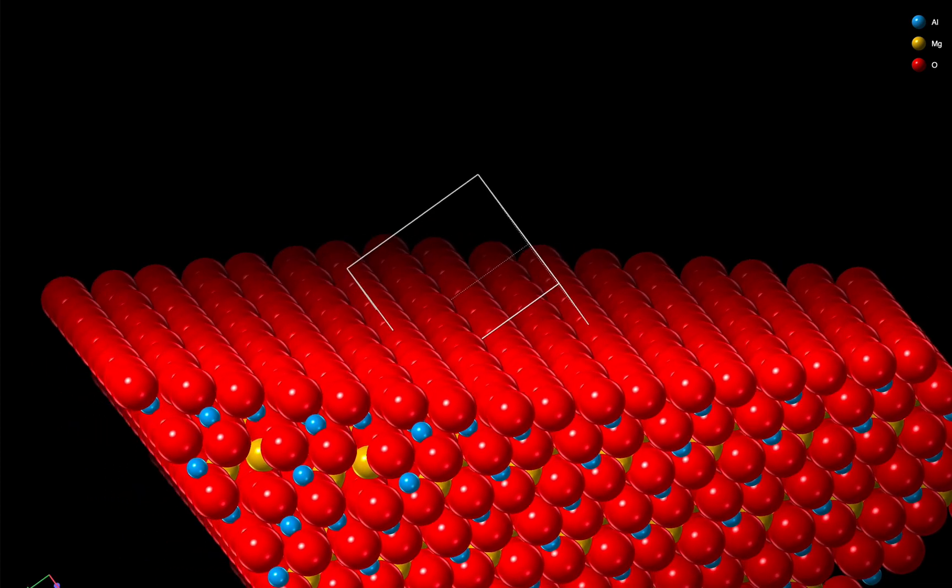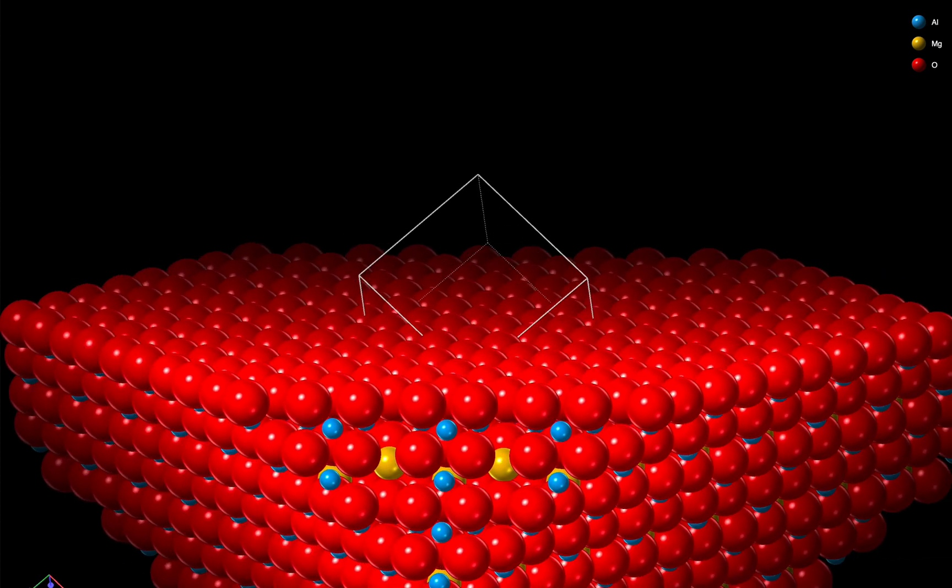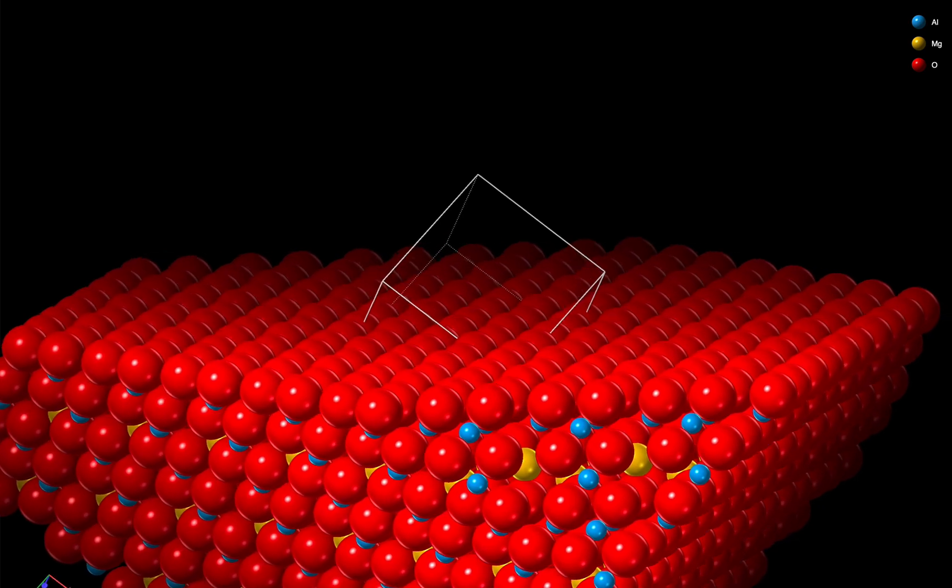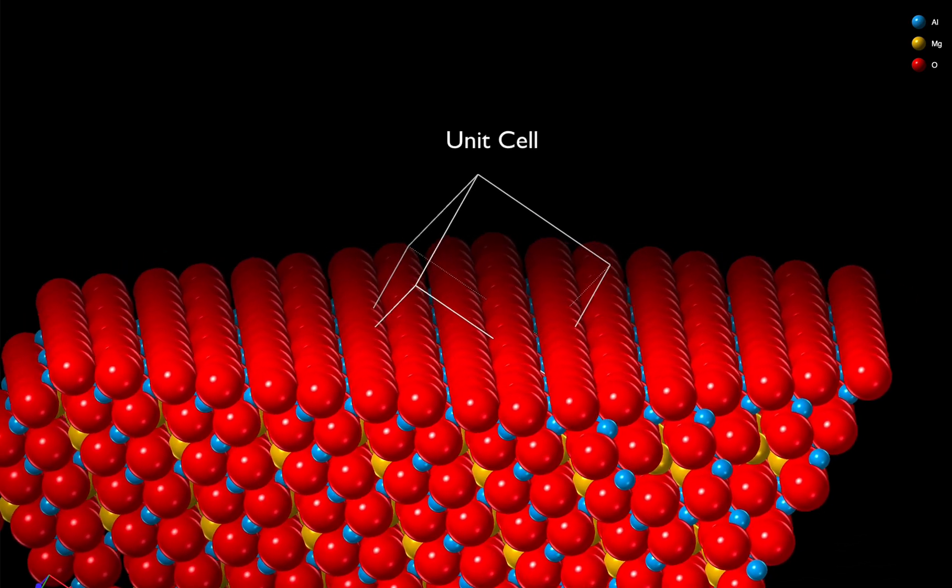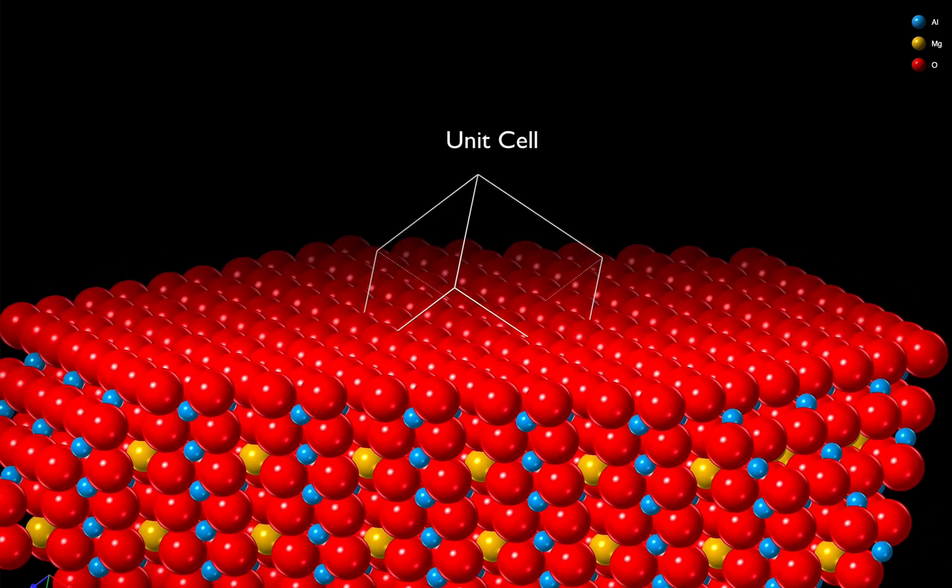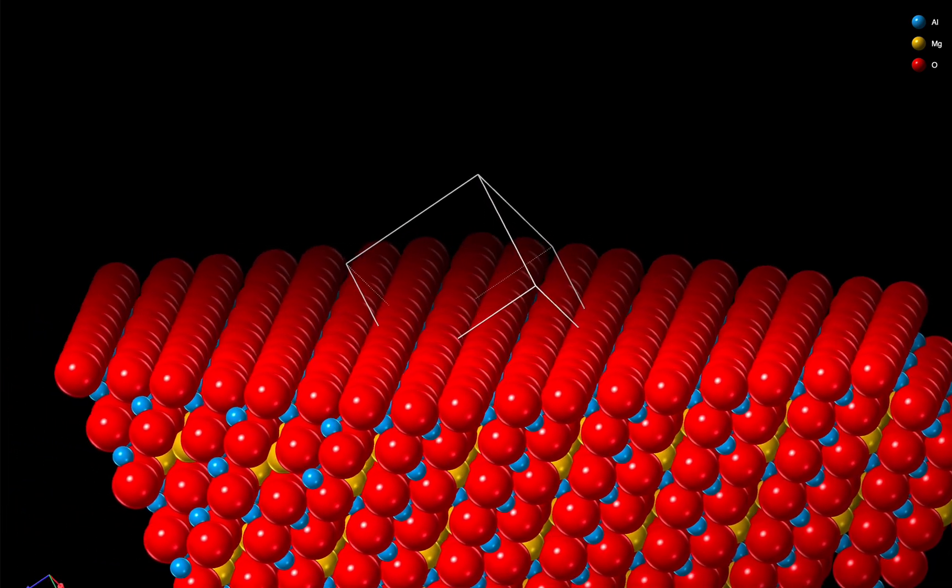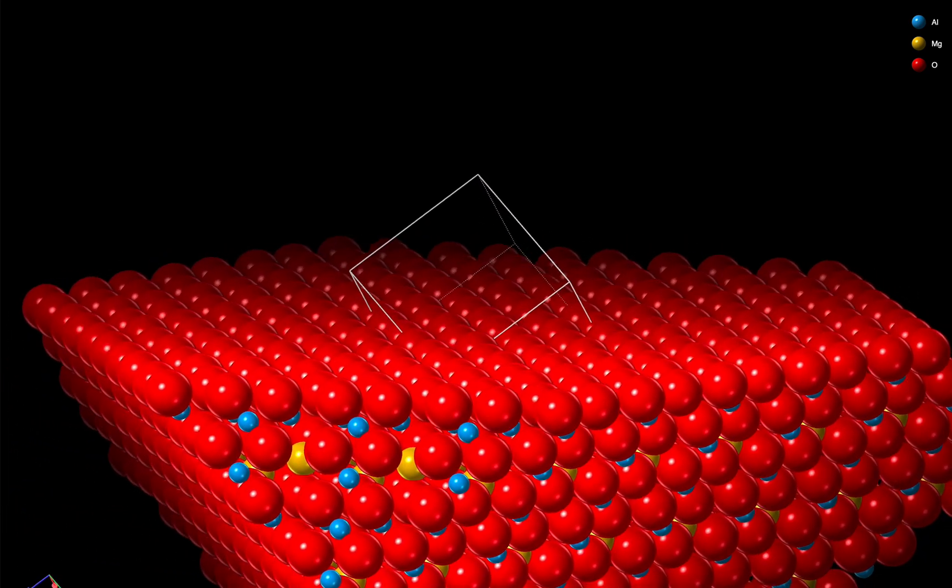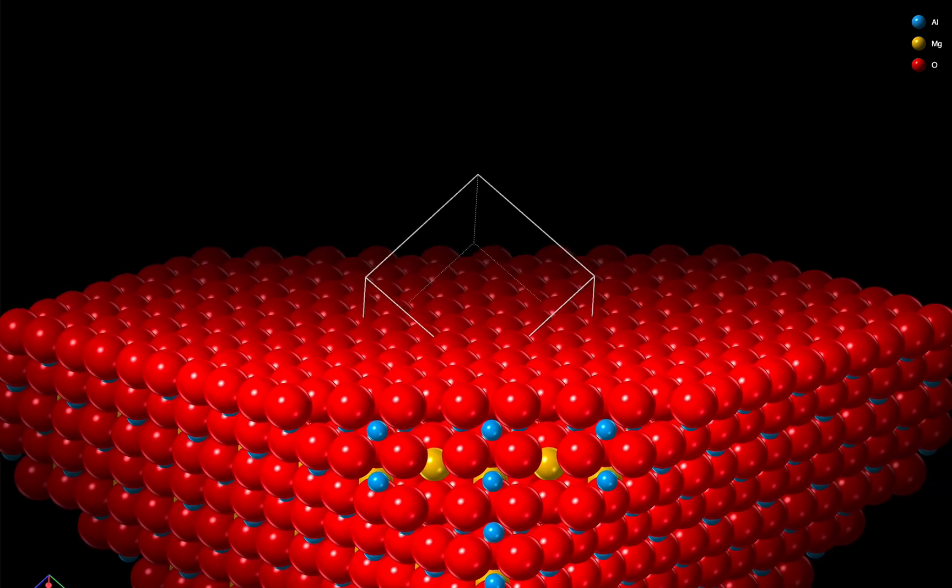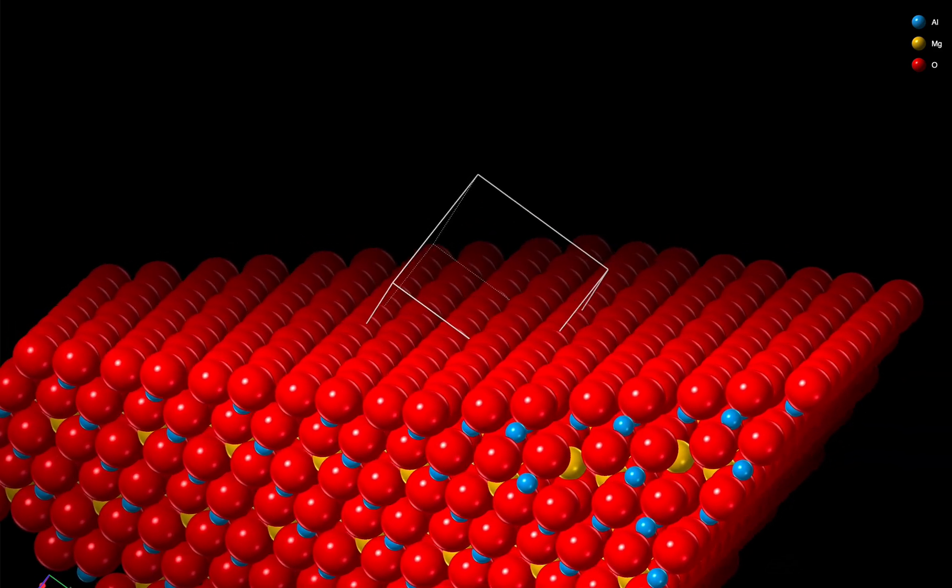We could easily have created the surface at other heights by moving the lattice plane to those positions. Notice that the unit cell is still visible in this view. We haven't transformed it in any way. We've merely hidden atoms above the surface that we created at a particular depth in the crystal structure.